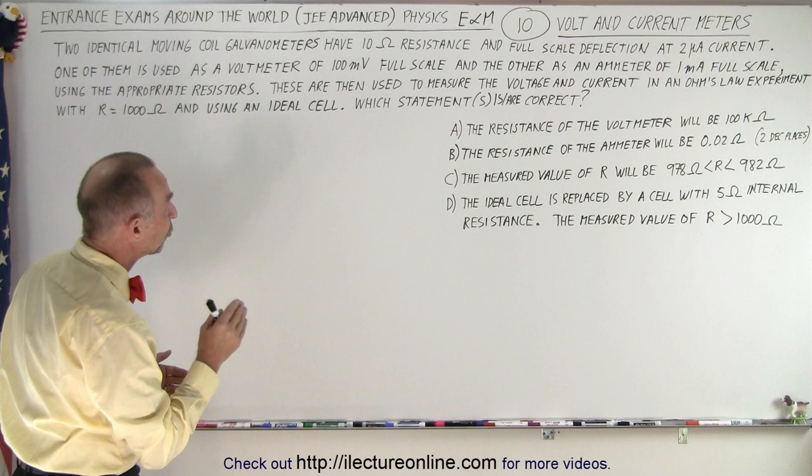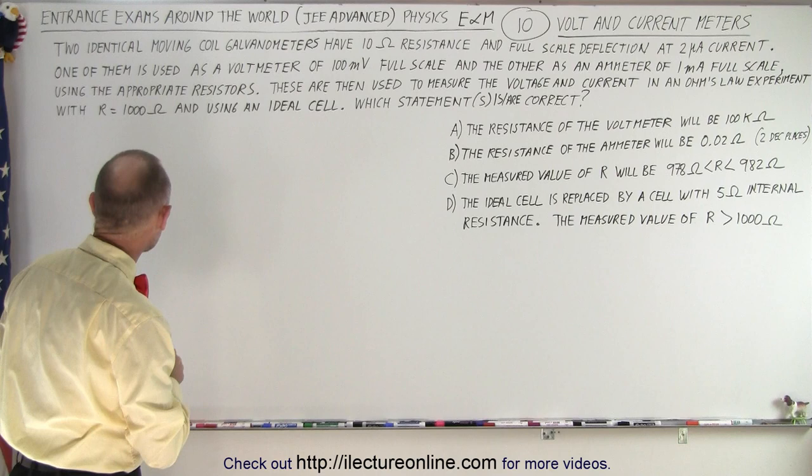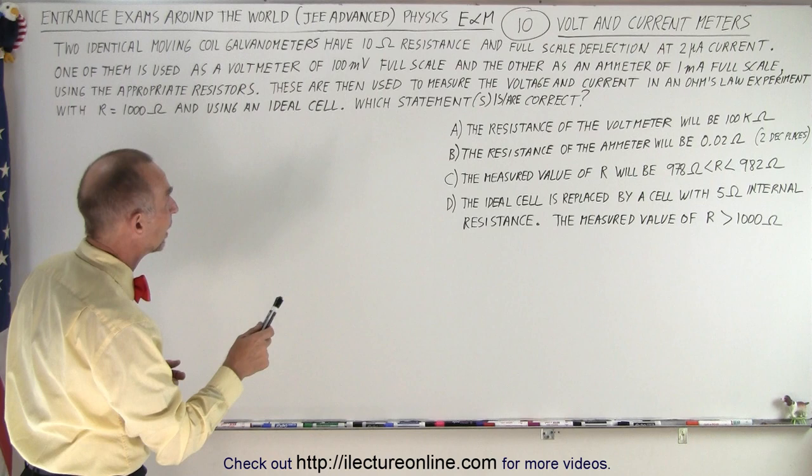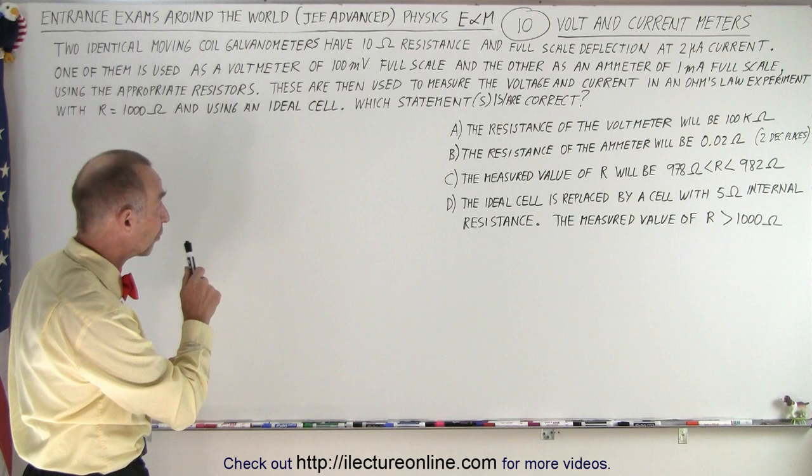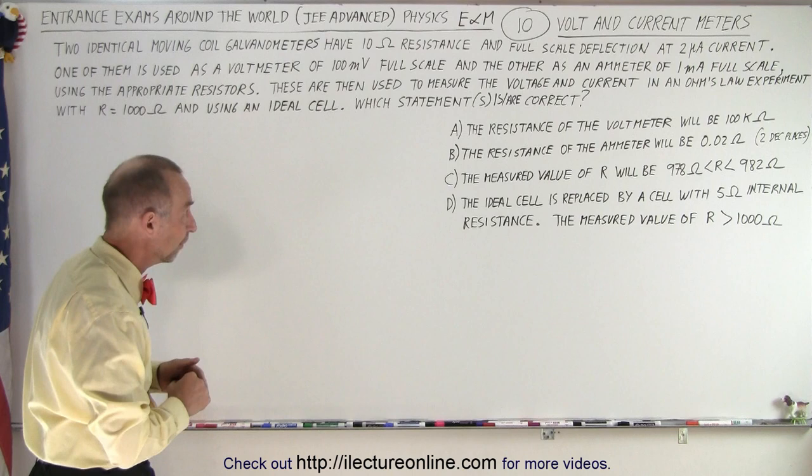One of them is used as a voltmeter to reach 100 millivolts at full scale, and the other one is used as an amp meter or a current meter with 1 milliamp full-scale deflection using the appropriate resistors. These are then used to measure the voltage and current in an Ohm's Law experiment where the resistance is 1000 Ohms and they're using an ideal cell. Now an ideal cell is a cell that doesn't have any internal resistance.